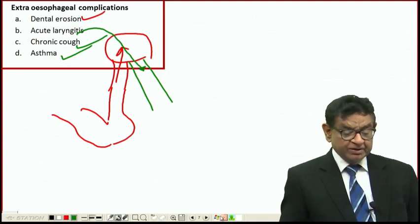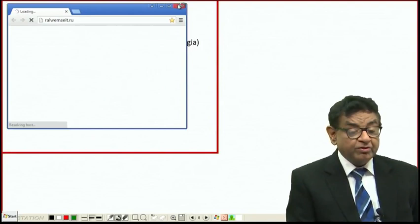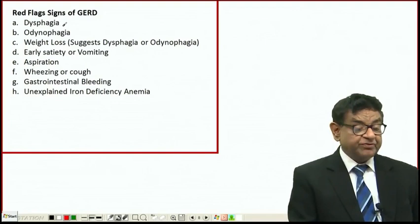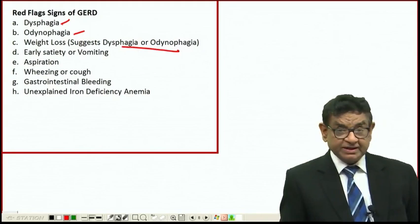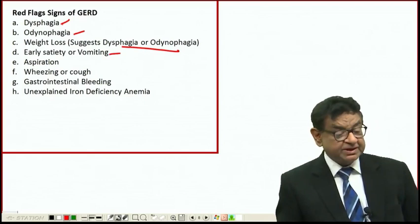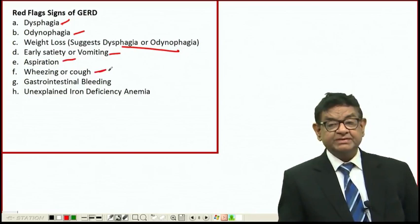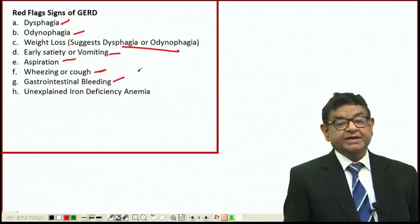What are the red flag signs of GERD? Dysphagia means obstruction is there. Odynophagia means painful swallowing, indicating severe esophagitis. Weight loss suggests dysphagia or odynophagia is a bad sign. Hematemesis or vomiting means some obstruction is there. Aspiration, wheezing, or cough means acid is entering the airways.